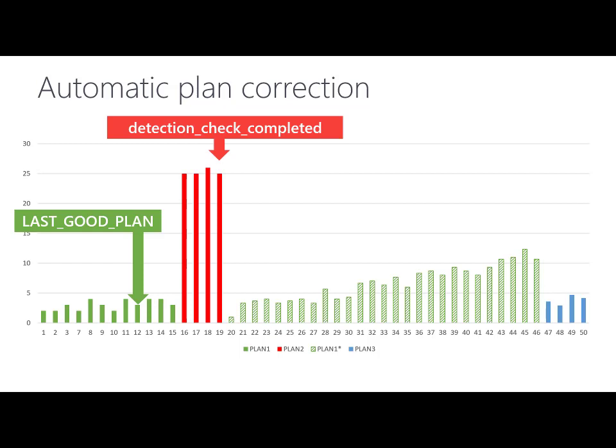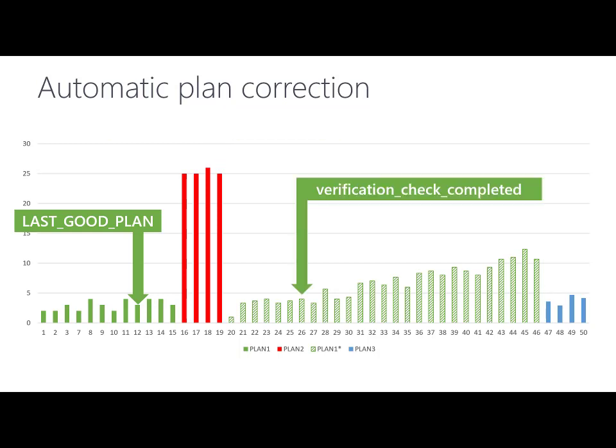After we force the green plan, we start what we call a verification phase, where we constantly monitor the performance of the forced plan. We periodically measure performance of the forced plan and compare it with execution statistics of the last good plan. If CPU usage is found to be higher, we can force SQL Server to recompile and come up with a third plan that will probably have better performance — in this case, the blue plan, which has better performance than the green plan.